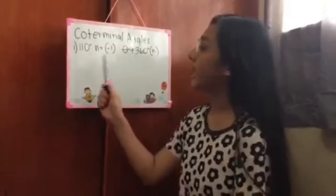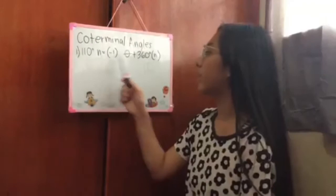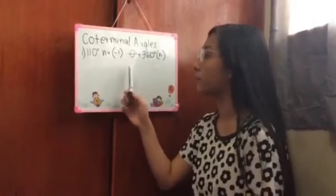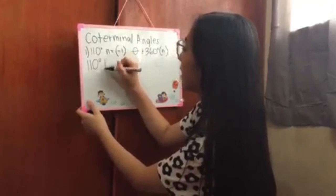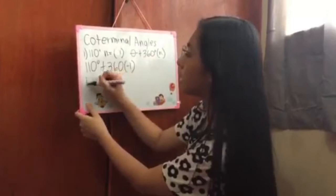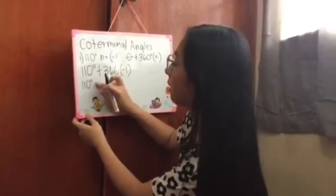For example, the given is 110 degrees. We have the formula angle plus 360 times n. So the n is negative 1. So 110 degrees plus 360 times negative 1, that gives us 110 minus 360 is equals to negative 250.